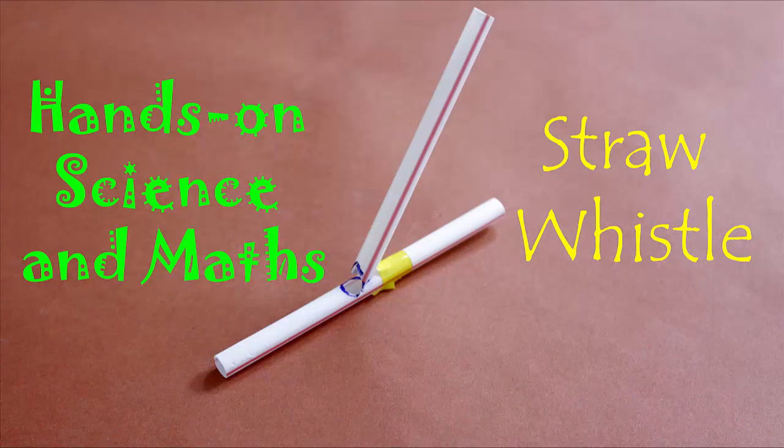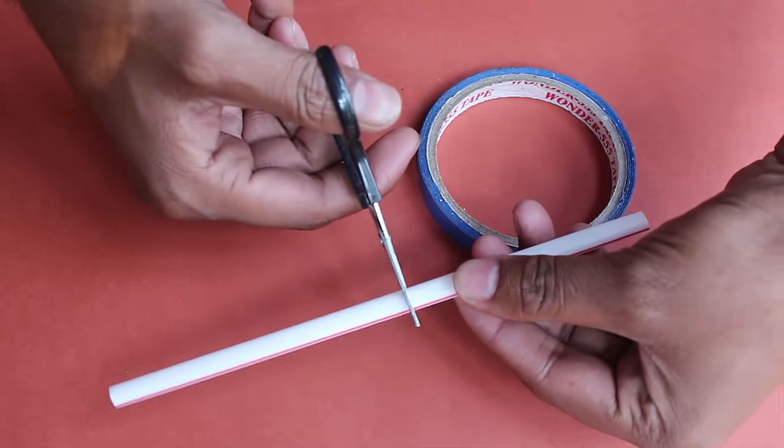Here you can hear the children tooting away at their whistles. You can make a similar whistle using a fat straw, tape, and scissors.